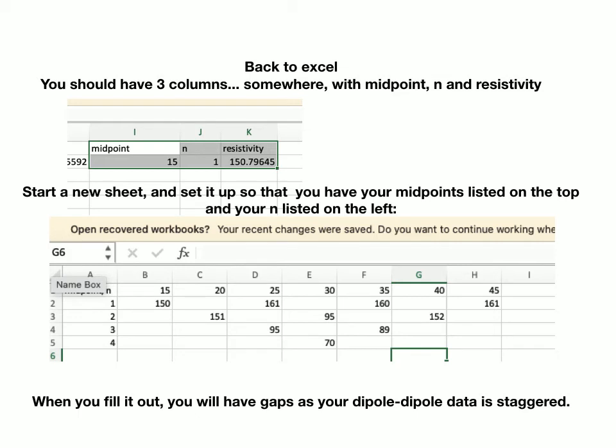If I then increased the current spacing, it goes up to 30 to 40 metres. My midpoint then is 20. n equals 2. My resistivity reading that I've calculated is 151. If I increase that again up to, let's say,